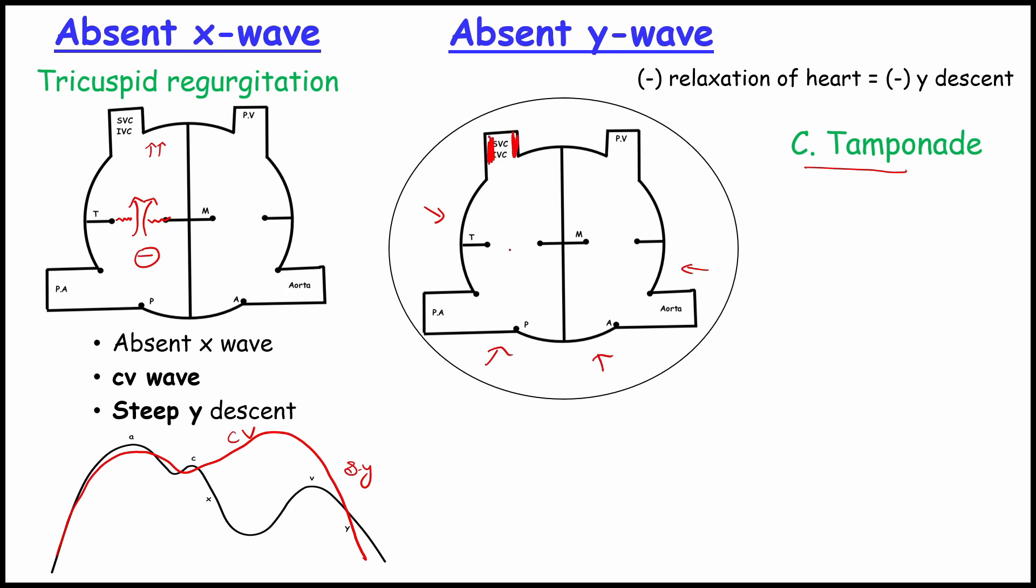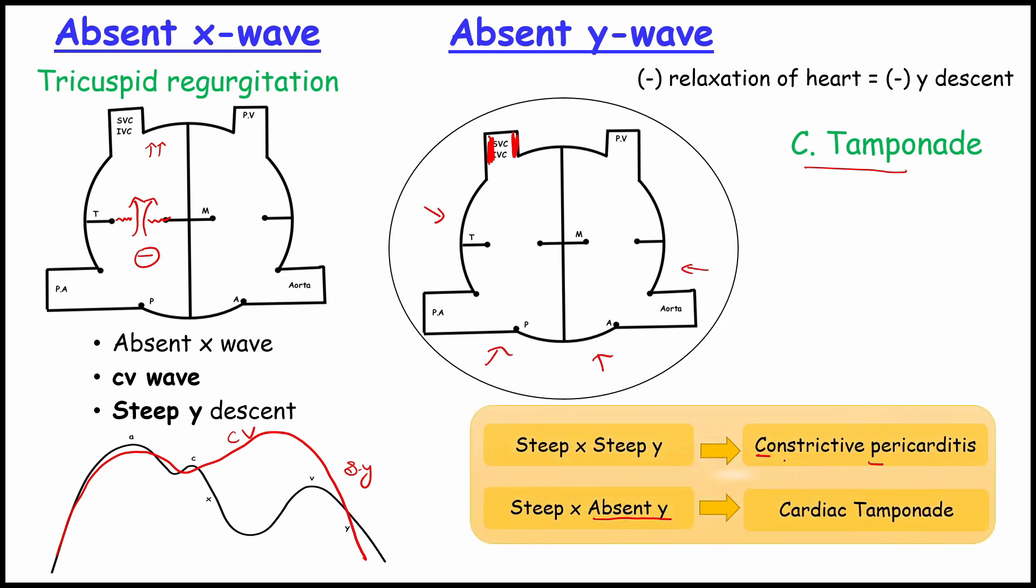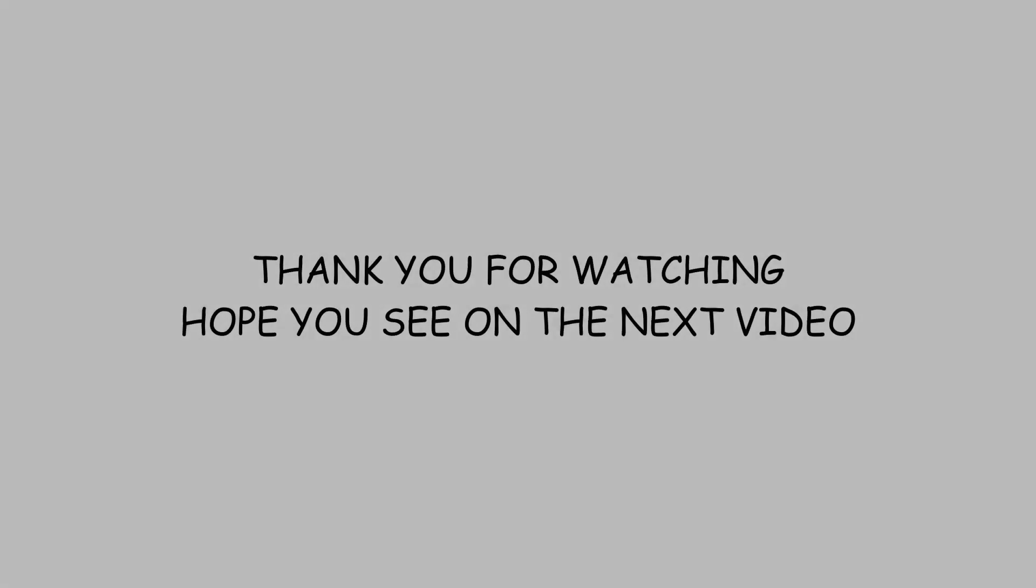Let's talk about some tricky MCQs. If the question asked like steep X and steep Y, that will be indicating the constrictive pericarditis. In other case, if the question asks steep X, but the absent Y indicates the cardiac tamponade. Hope you see in the next video. Thank you for watching.